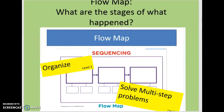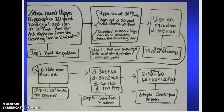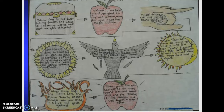A flow map shows sequence and organizes multi-step problems — great for math, great for step-by-step. Here is mitosis with the stages. This is a word problem where the teacher gave students the steps and they have to show the work underneath. Here's a visual of the plot of a story in language arts. Multi-flow is cause and effect — all of this is DOK 2 and 3, whereas circle and bubble maps are DOK 1, so these are a little bit more complicated.